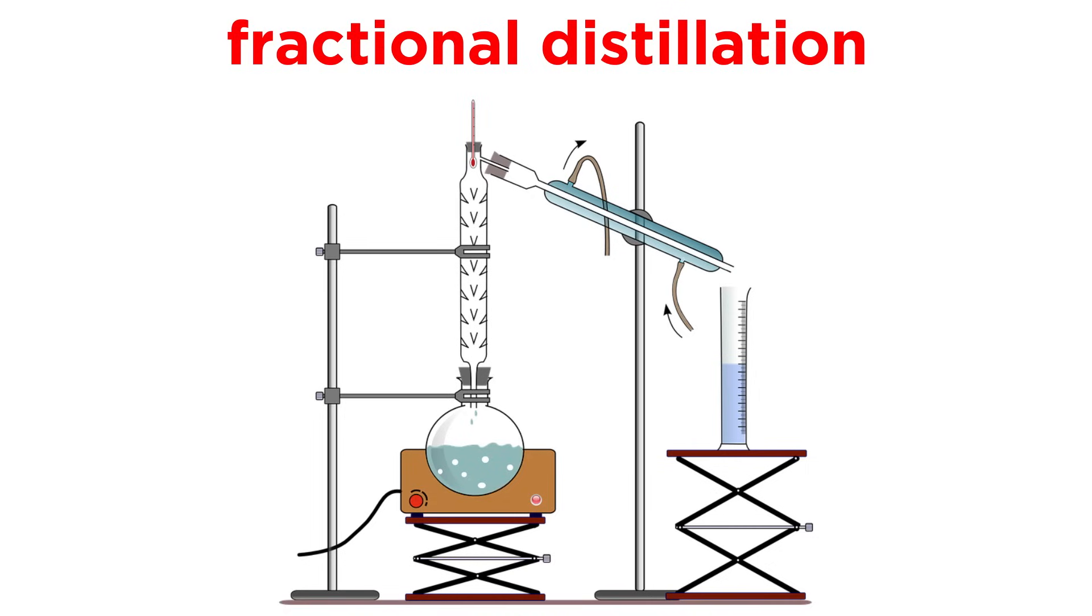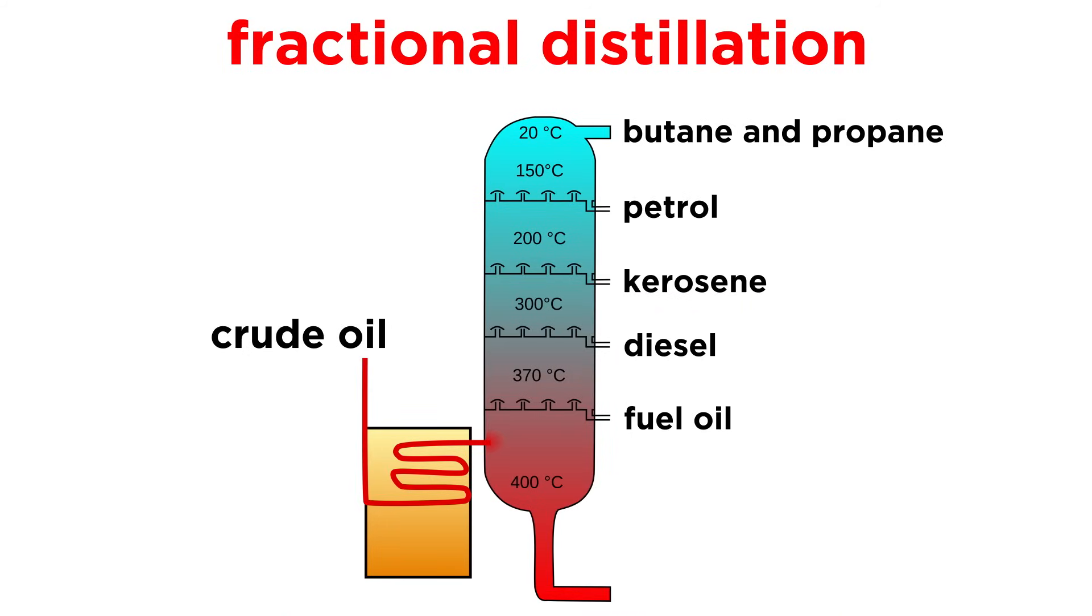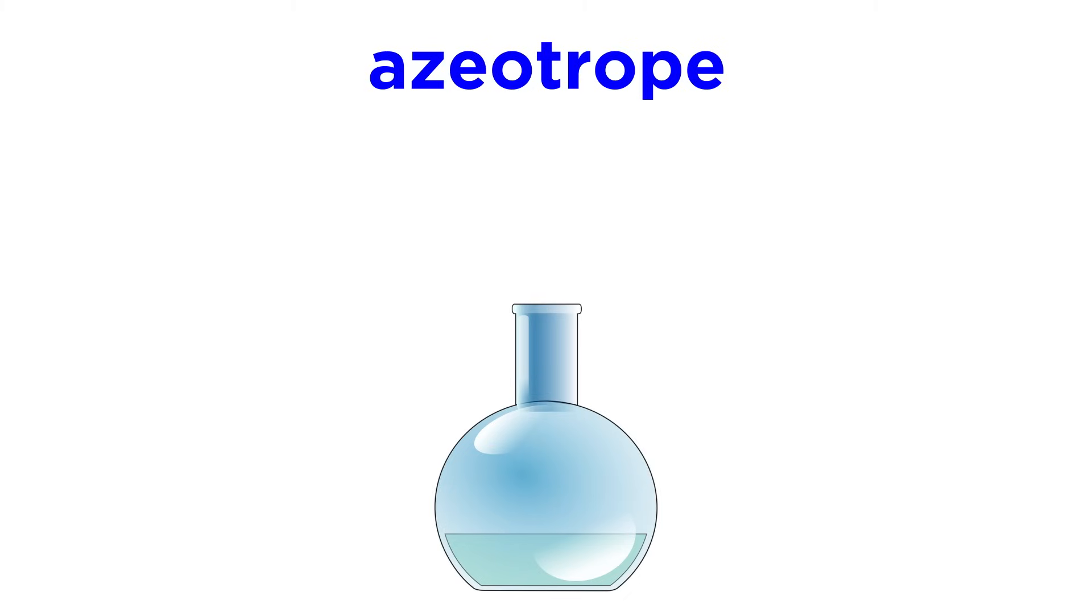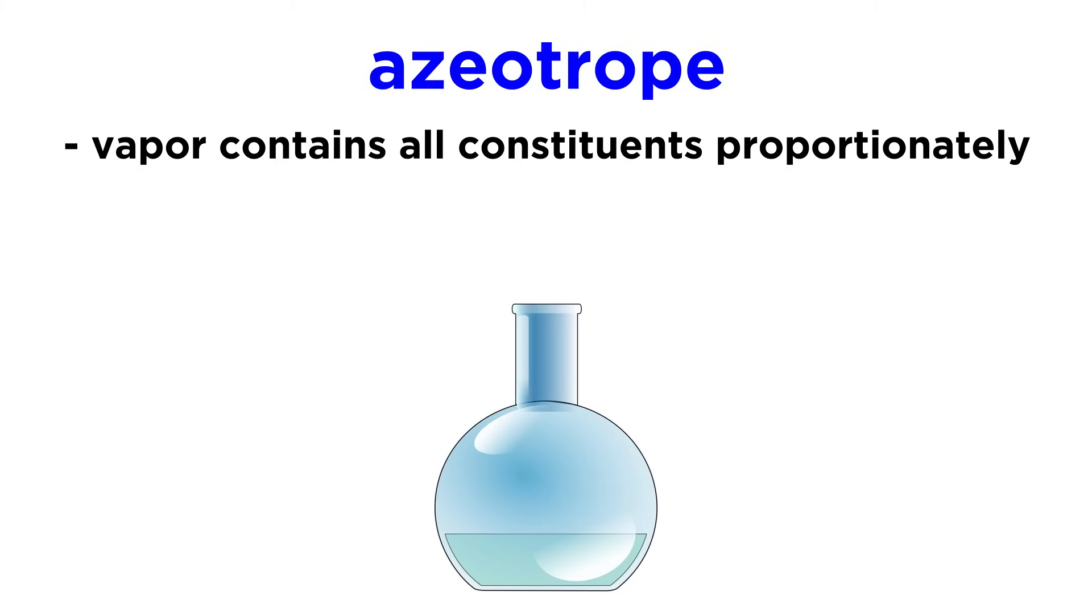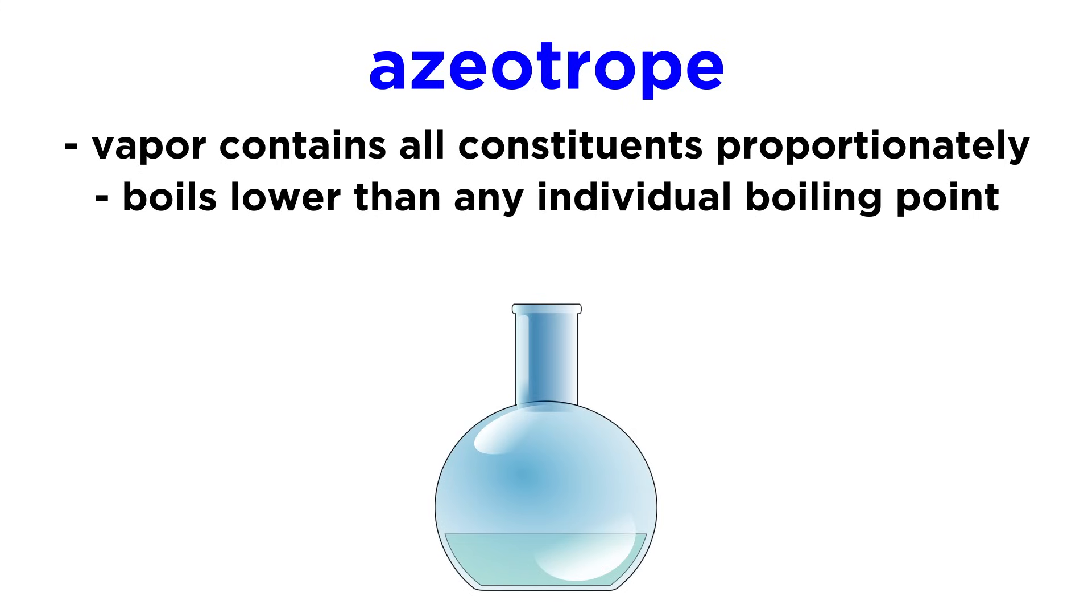There are other ways to do distillation too, like fractional distillation. This utilizes a fractionating column to separate mixtures with many components, like the atmosphere, or certain mixtures with industrial applications. Things also get tricky if the mixture being distilled is an azeotrope. This is a mixture of two or more liquids that, when boiled, the vapor will contain those constituents in the same proportion as the liquid, and it will boil at a temperature lower than any of their individual boiling points. Ethanol and water is an example of such an azeotrope, and we will need special techniques for such mixtures.